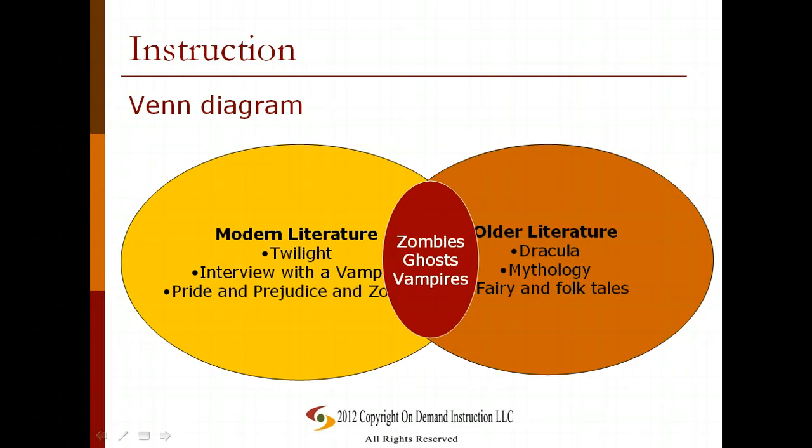You can also look at Venn diagrams. A Venn diagram is a great tool to use particularly for comparison and contrast. In the left yellow bubble we have one major idea; on the right in the brown bubble we have a second major idea; and in the red overlapping section we have ideas that are common to both. So a Venn diagram shows where things are different and where things are similar.